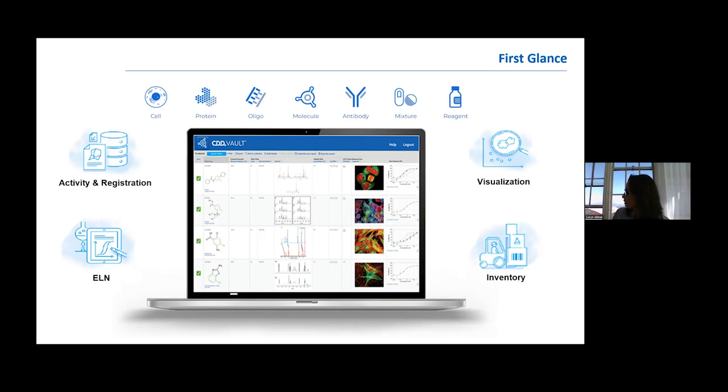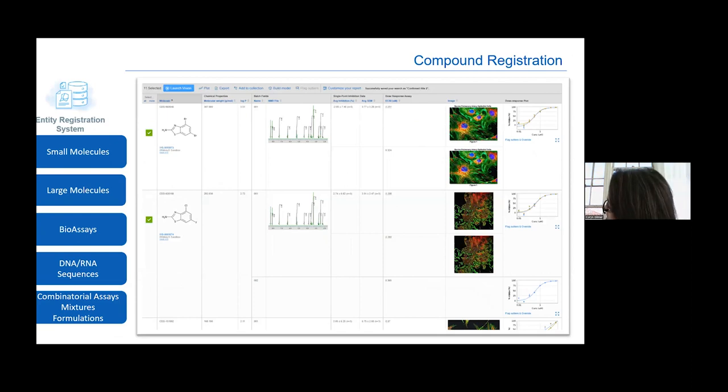The first one is entity registration system. Compound registration allows you to store your data related to small molecules, large molecules, bioassays, DNA and RNA sequences, combinatorial assays, mixtures, and formulations.